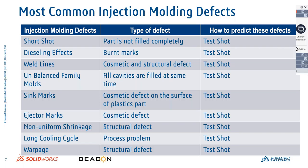Previously, to predict defects like short shots, you had to take a test shot once the mold or prototype was done and then see how and where defects occurred. Defects include burnt marks due to overheating of material, weld lines which are both a cosmetic and structural defect, unbalanced family molds where different geometry parts inside a single mold fill at different rates, and sink marks which affect the surface of the part.